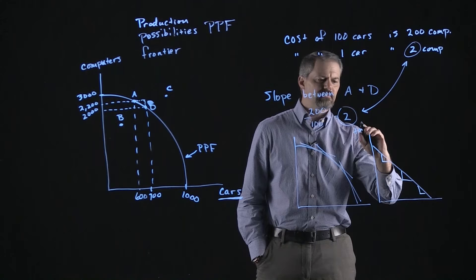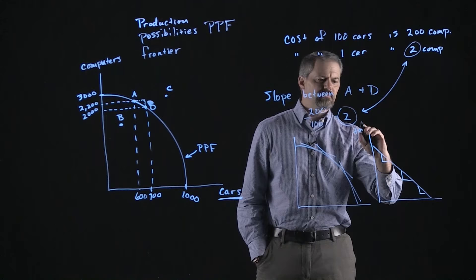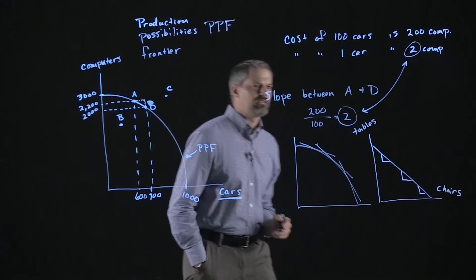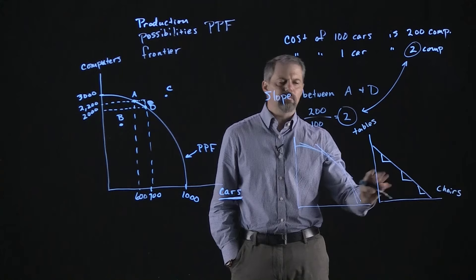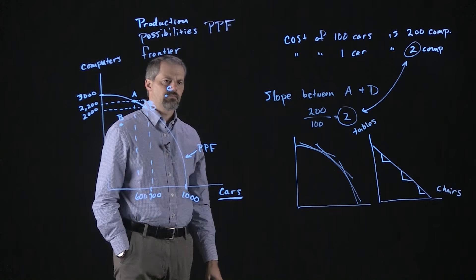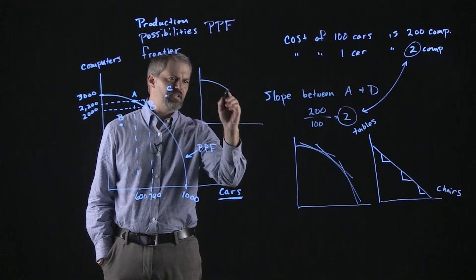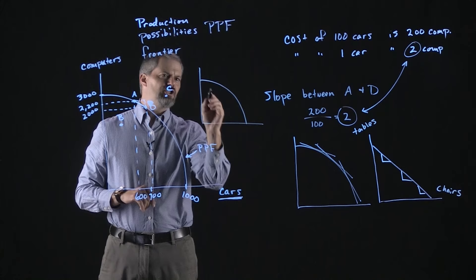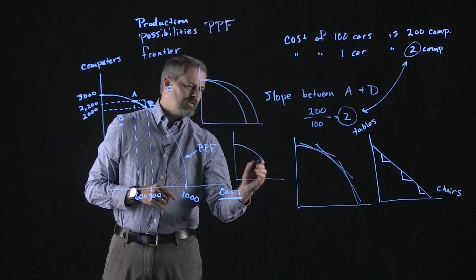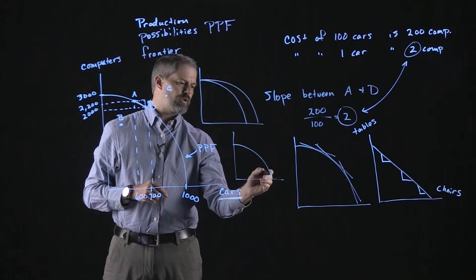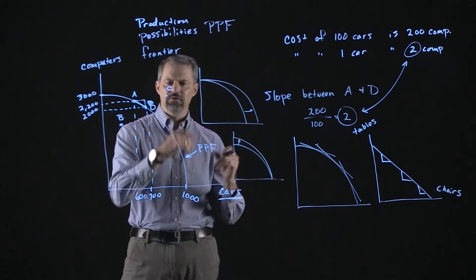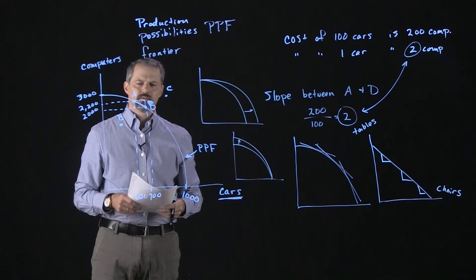If the inputs used to produce both goods are the same — not specialized — then the production possibilities frontier is linear, and the opportunity cost of the good on the horizontal axis does not change. Something like tables and chairs would be an example of two goods using the same inputs and technology, giving a linear PPF. The production possibilities frontier can also shift: a change in technology or inputs can shift the PPF outward — for example, if technology improves so that computer production increases, or if it shifts out in both directions.